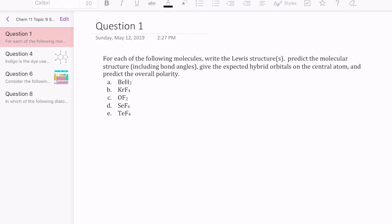Hey everyone, let's take a look at question number one in Topics 9, Chem 11. This is a question about drawing Lewis structures and then using VSEPR to predict the molecular structure as well as the bond angles.